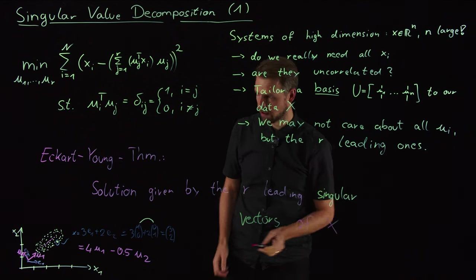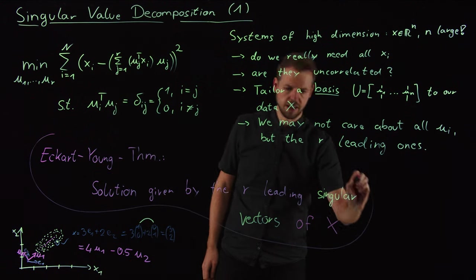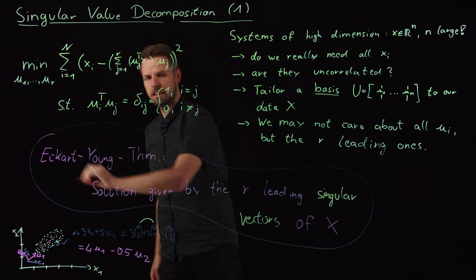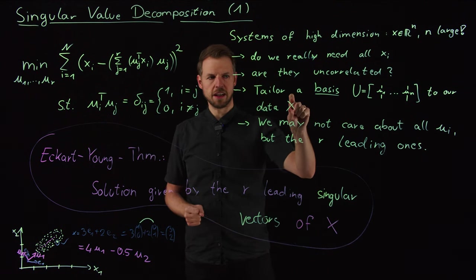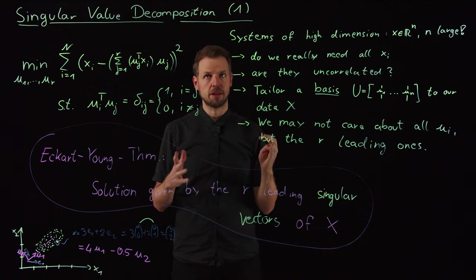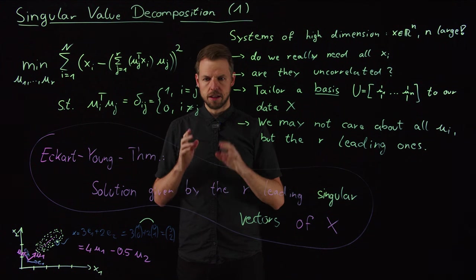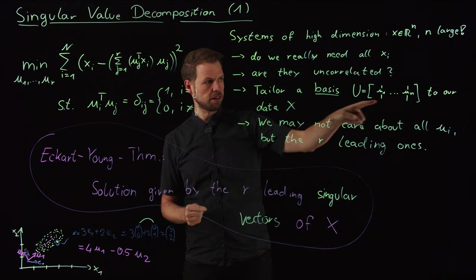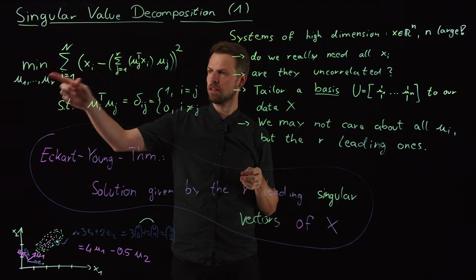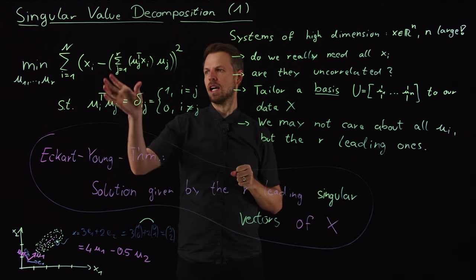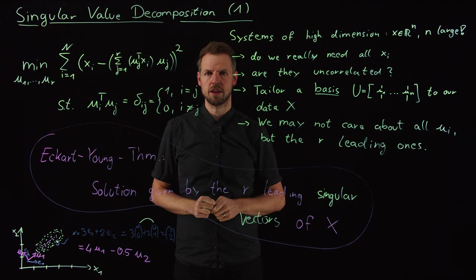of X. So this is the main statement now. And we are going to see in the next video how to actually compute it. But what it means is if I have my data matrix X and I can perform the singular value decomposition, which we are going to see what it really means, we get a matrix U, such a basis matrix. And taking the first r columns of this gives me the basis that really solves this optimization problem meaning I have the smallest projection error. Thank you and see you in the next video.